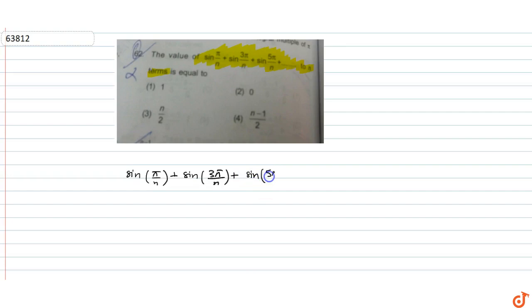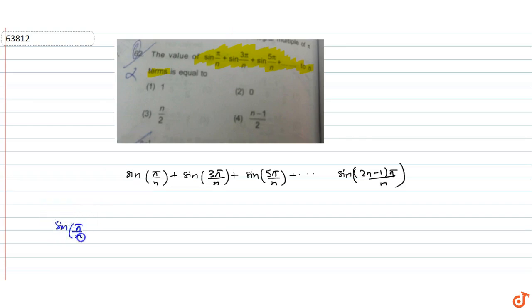The question is to find the value of sin(π/n) + sin(3π/n) + sin(5π/n) up to n terms. The series goes up to sin((2n-1)π/n).